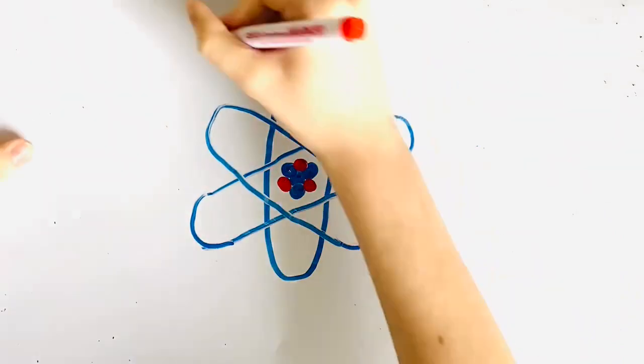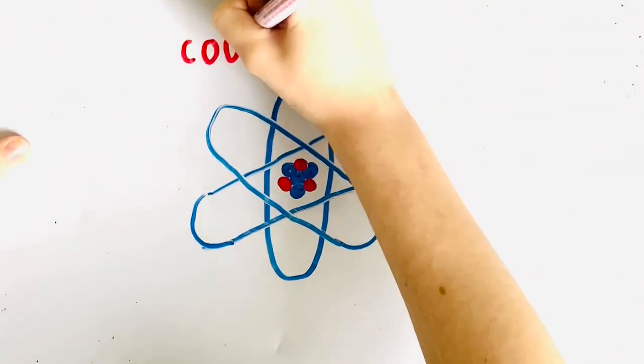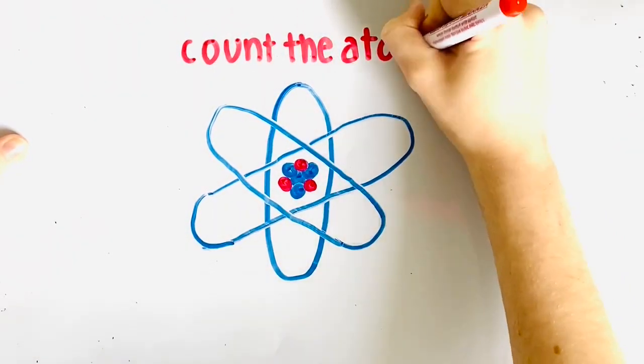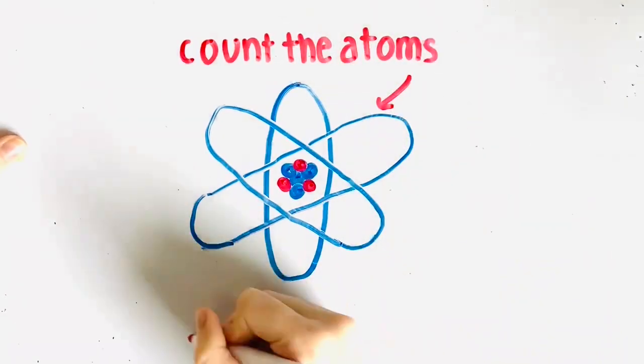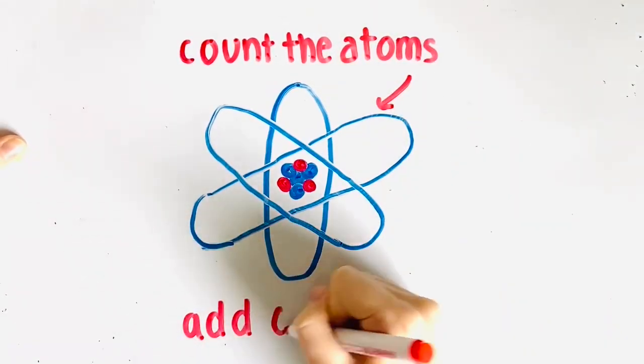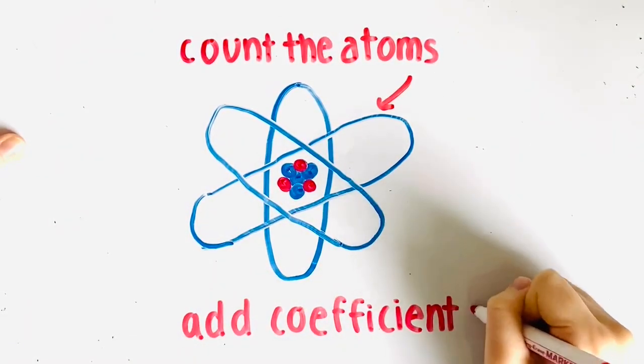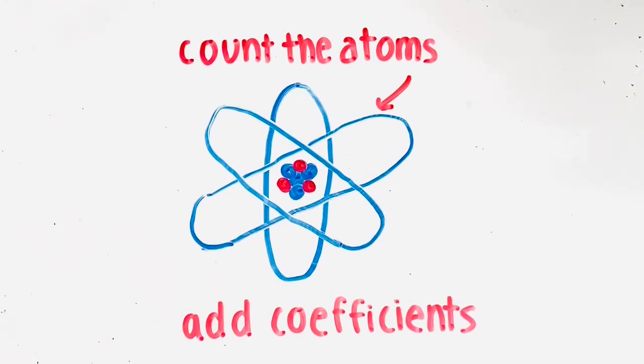When balancing chemical equations, you need to count the amount of atoms on both the reactants and product sides, and then add coefficients in front of the elements or compounds to balance them.